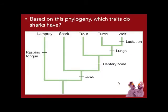Looking at this phylogeny — what traits do sharks have? They got jaws. So you start in the past, go up to the splitting event, follow that lineage — jaws — they got jaws. Do they have a dentary bone? No, they don't have a dentary bone.